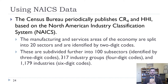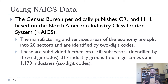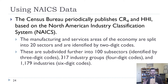The Census Bureau will often give CR4 and HHI based on the NAICS data. The manufacturing and services area of the economy are split into 20 sectors, so the big sectors are identified by two-digit codes, then subdivided further into 100 sub-sectors which have three-digit codes, 317 industry groups which have four-digit codes, and then 1,179 industries which have six-digit codes.